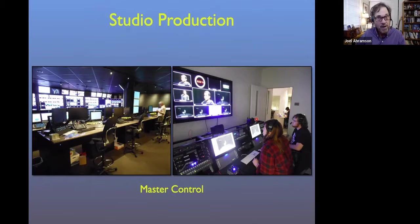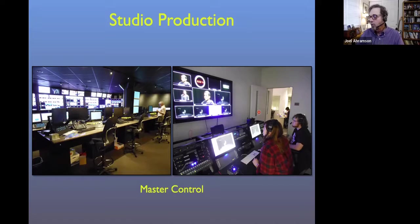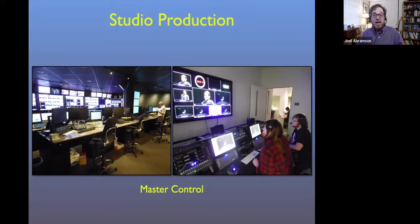Basically, what happens in master control rooms is that signals come in from out of house — from out in the field, from a satellite feed, or from the network — and get routed in there. From master control, we can route it into our control room. And then the signal from our control room can get routed out of the building to wherever it needs to go. From our master control at De Anza, we can route signal to other places, and it's also set up to take video feeds from a remote in a classroom.